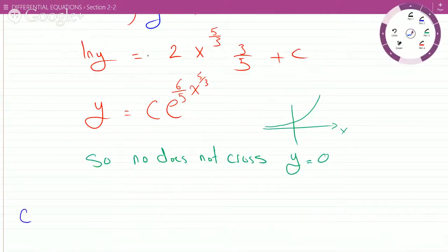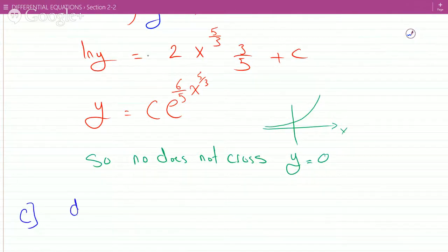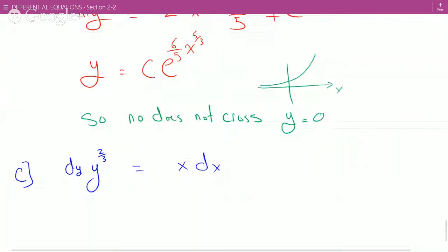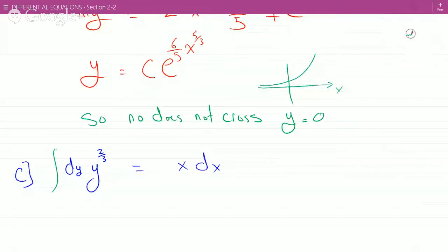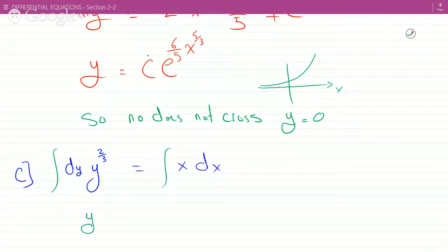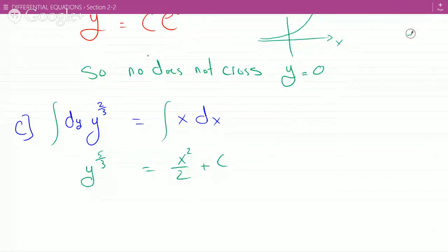Whereas for part c, if you solve part c, we would get dy over, or dy times y to the 2/3rds equals x dx. And then you can integrate both sides here. And you would get y to the 5/3rds equals x squared over 2 plus c raised to the 3/5ths.